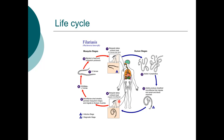On stage five, the microfilariae shed their sheath, penetrating the mosquito's midgut and migrating to the thoracic muscles. For the microfilariae to undergo maturity, they need the energy available in the mosquito's thoracic muscles. On stage six, inside the thoracic muscles, the microfilariae develop from larval stage one to larval stage two, and finally to larval stage three, which is the infective form.